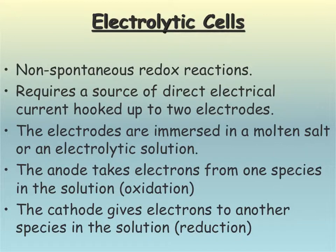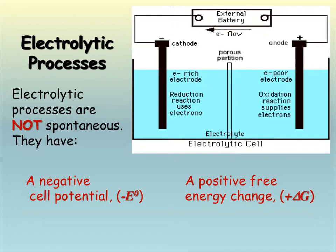The electrodes for the cell are immersed in molten salt or in some sort of electrolytic solution. And we still have oxidation at the anode and reduction at the cathode.